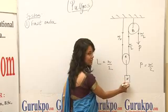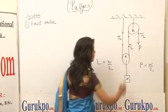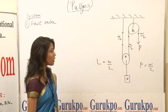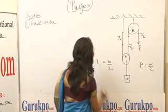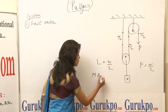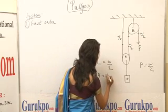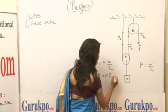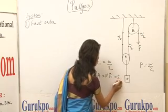The load is given by W. Thus, the weight is being reduced to W by 2. Due to this, the mechanical advantage and the velocity ratio will get equalized and that will come as 2.